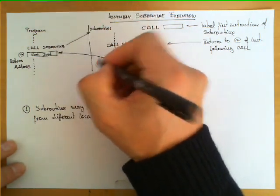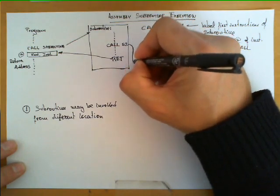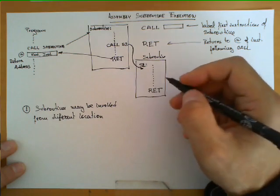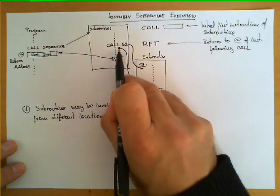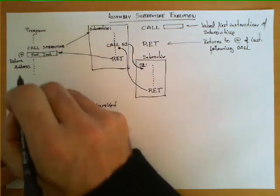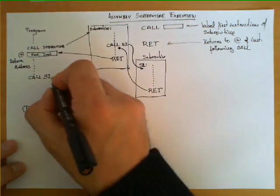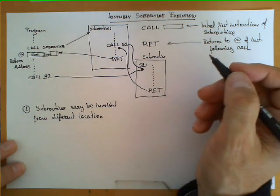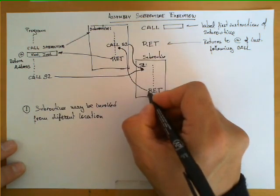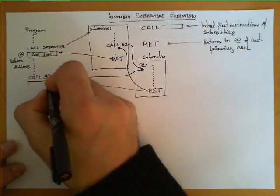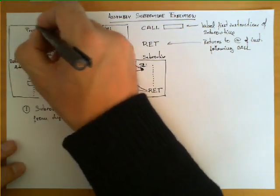So we have three elements here: the main program, the first subroutine, and S2. Calling the first subroutine breaks the sequence and starts executing its first instruction. The RET of the first subroutine returns to the instruction following that CALL. But if the initial main program also makes a direct call to S2, the return instruction in S2 would return not to the first subroutine's location, but to the instruction following that call in the main program.